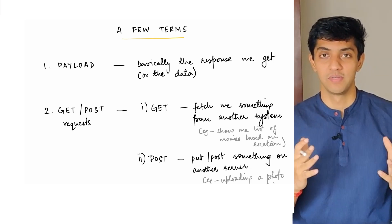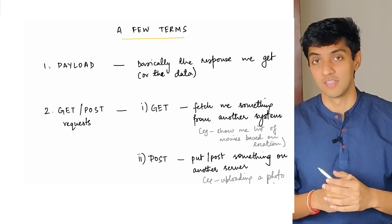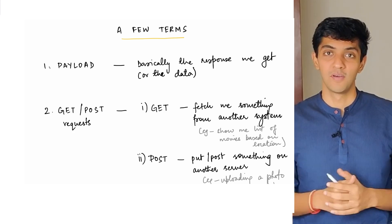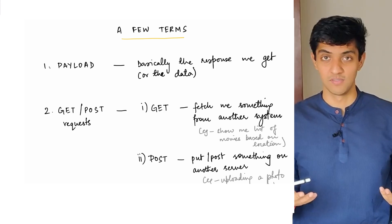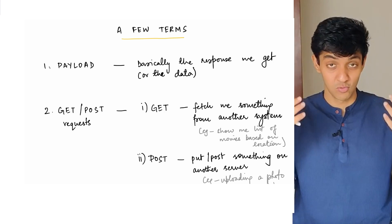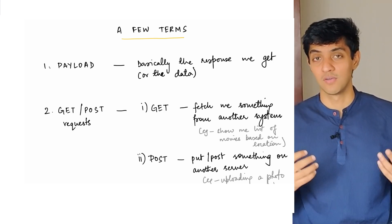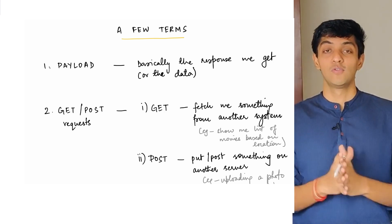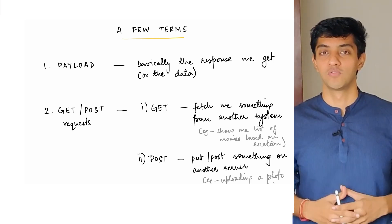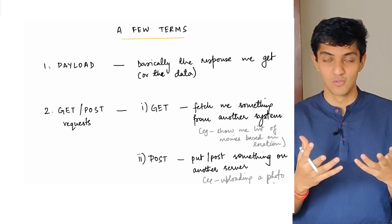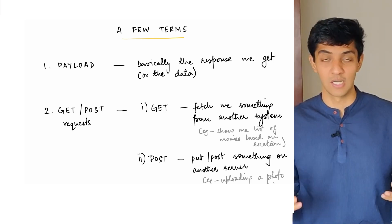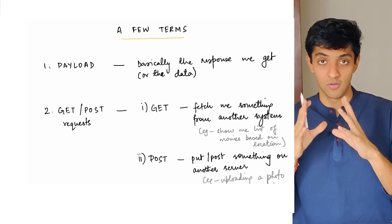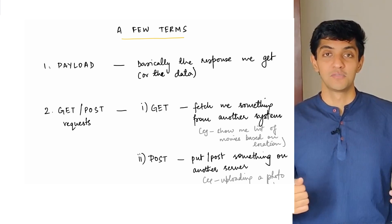That concludes the short primer on what APIs are. We looked at the restaurant example to understand the definition of an API and how it works. We then saw how it looks in real life through the BookMyShow app. Then we saw how the API truly looks — the URL, base URL, endpoint, output, JSON, and parameters. We saw how to read an API response. And finally we looked at what a payload is and what GET and POST requests mean. That's a lot of information to grasp in a 10-15 minute video, so feel free to revisit, and put any questions in the comments. Hope this was helpful — until the next video, bye-bye!